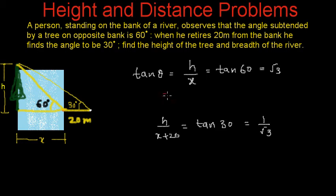So from here we will get h is equal to root 3 times x. And from here we will get h is equal to x plus 20 divided by root 3. So this is equation number 1 and this is equation number 2.